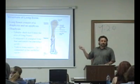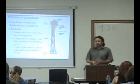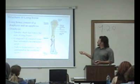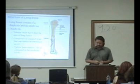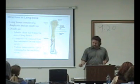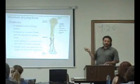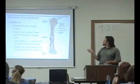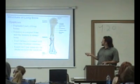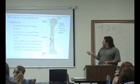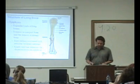Spongy bone is where you're going to have the trabeculae. The yellow bone marrow is found in the medullary cavity, as opposed to red bone marrow, which is found in other places. The epiphysis is the expanded end of the long bones, and it's usually lined with articular cartilage — that's the part that forms the joints. The interior of the epiphysis is made up of spongy bone.